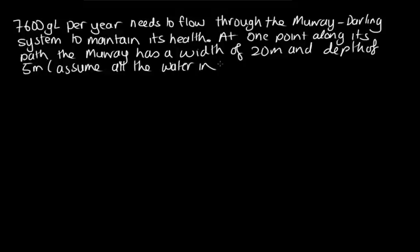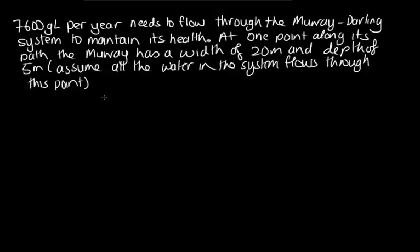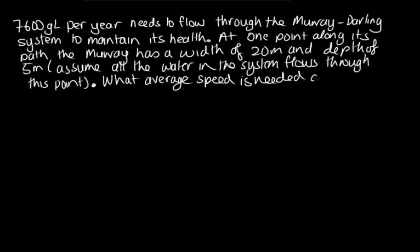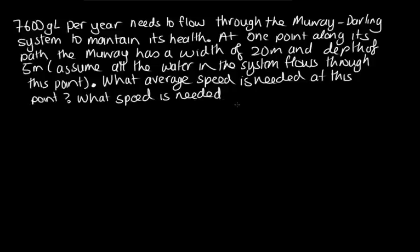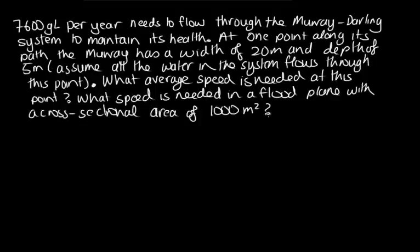We're going to assume that all the water in the system flows through this point. What average speed is needed at this point? And what speed is needed in a flood plain with a cross-sectional area of 1,000 metres squared?